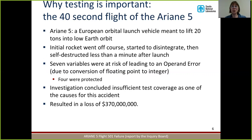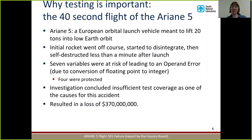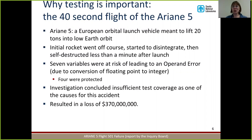The second software testing disaster is the 40-second flight of the Ariane 5. The Ariane 5 was a European orbital launch vehicle meant to launch 20 tons into low-Earth orbit — which it was completely unsuccessful at doing. The rocket went off course, started to disintegrate in the Earth's atmosphere, and then self-destructed less than a minute after launch. The reason was that seven variables in the code were at risk of an operand error due to conversion of a floating-point number to integer. A 32-bit integer can only hold up to about 2 billion, and they were trying to put numbers much larger than that. Four of the seven variables were protected by assertions, but three were not, and it was one of those three that caused this disaster. The investigation concluded that insufficient test coverage was one of the causes, resulting in a loss of almost $400 million.